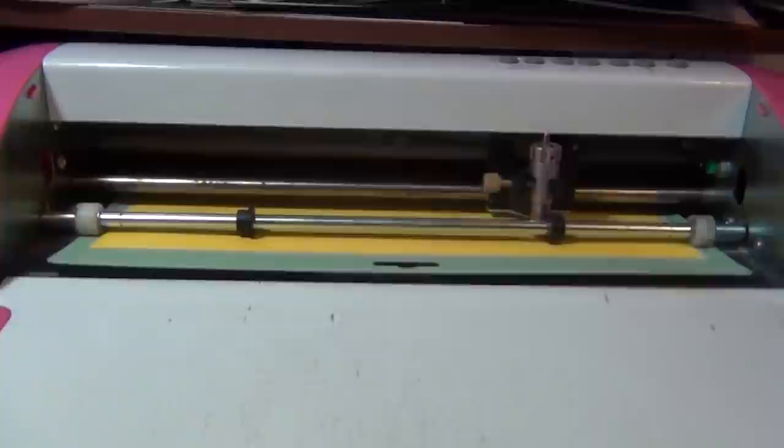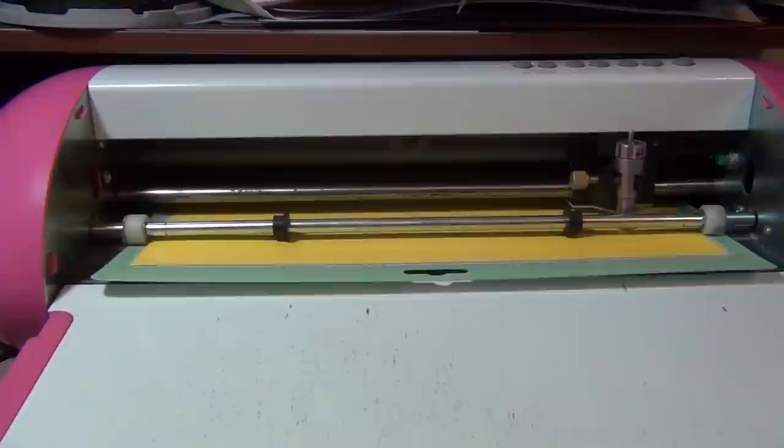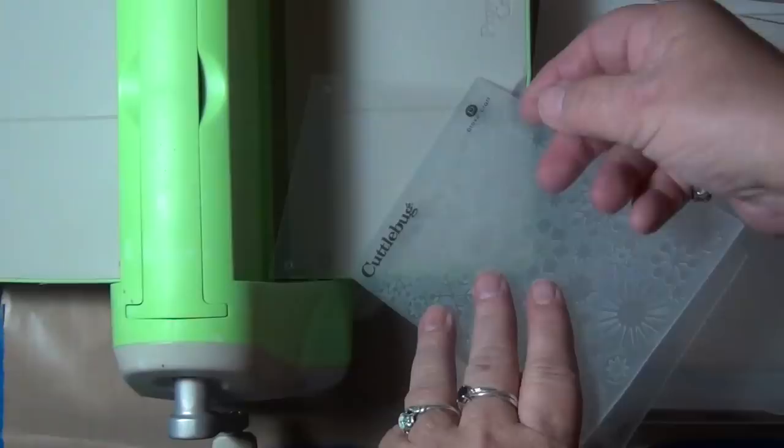I started out by cutting out all of the pieces using my Gazelle by BossCut. I love this machine. Each of the four sides of the lantern has a transparency window. I wanted to make the windows a little bit more interesting so I used my Cuddlebug and the Snowflake Embossing Folder.